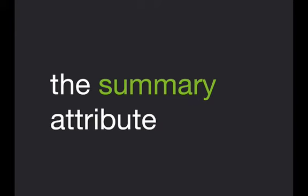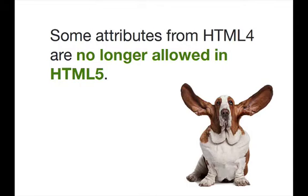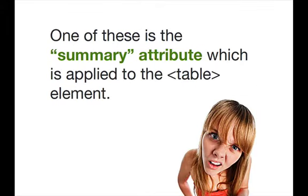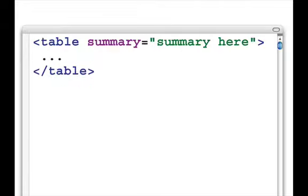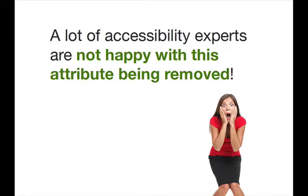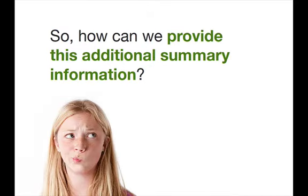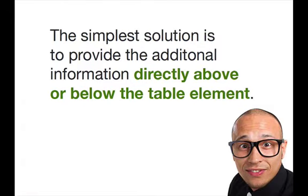Next up, I want to talk about the summary attribute. Some attributes from HTML4 are no longer allowed in HTML5. One of these is the summary attribute, which is applied to the table element. The summary attribute is used to provide assistive technologies with additional information about the table. A lot of accessibility experts aren't happy at all with this attribute being removed. So how can we provide this additional summary information to a table if we can't use the summary attribute? The simplest solution is to provide the additional information directly above or below the table element.